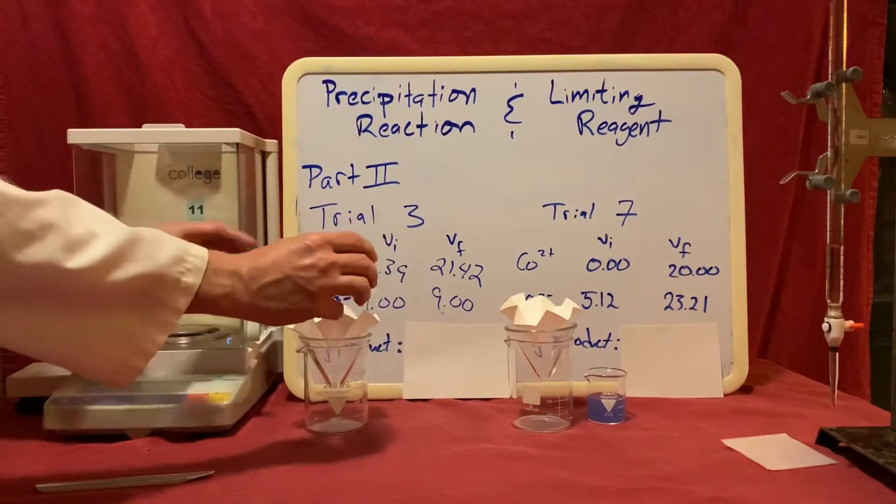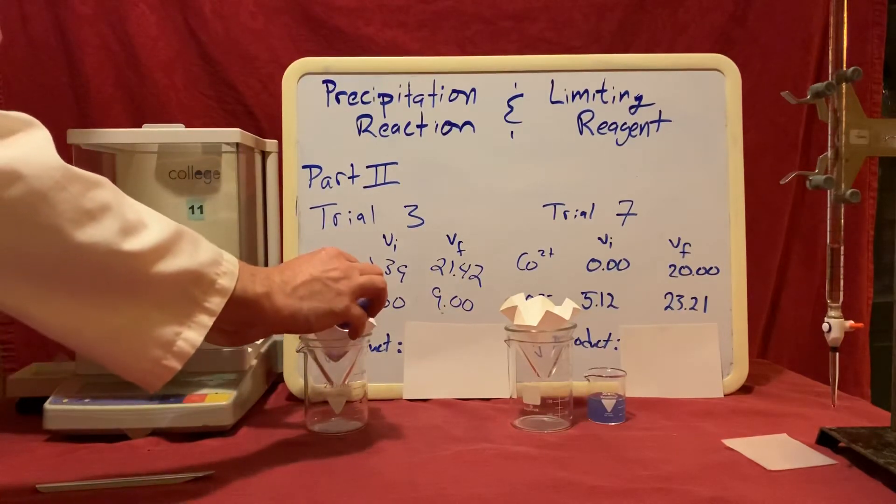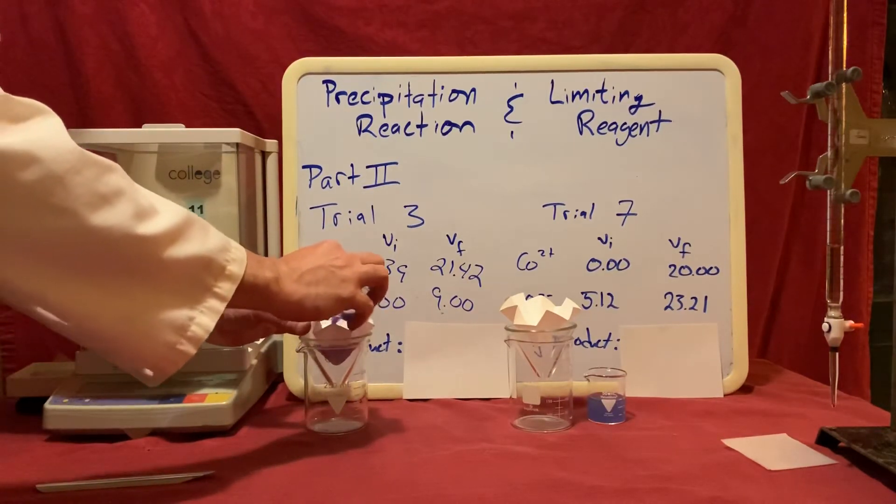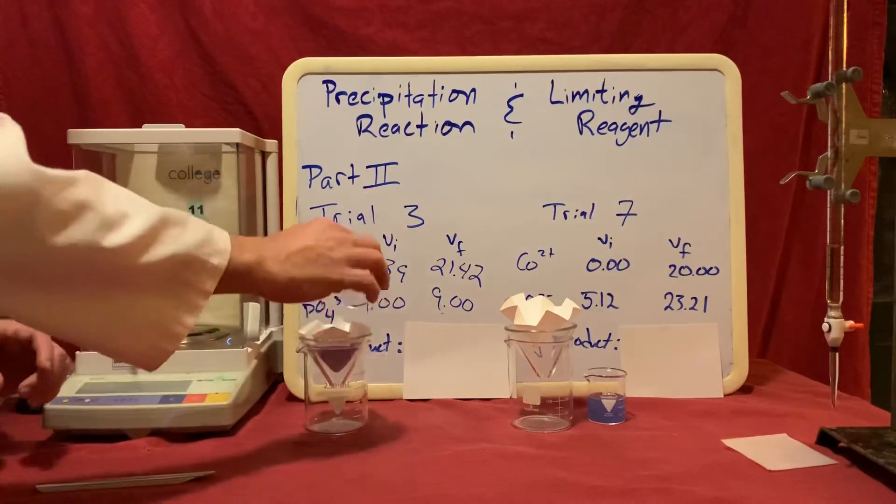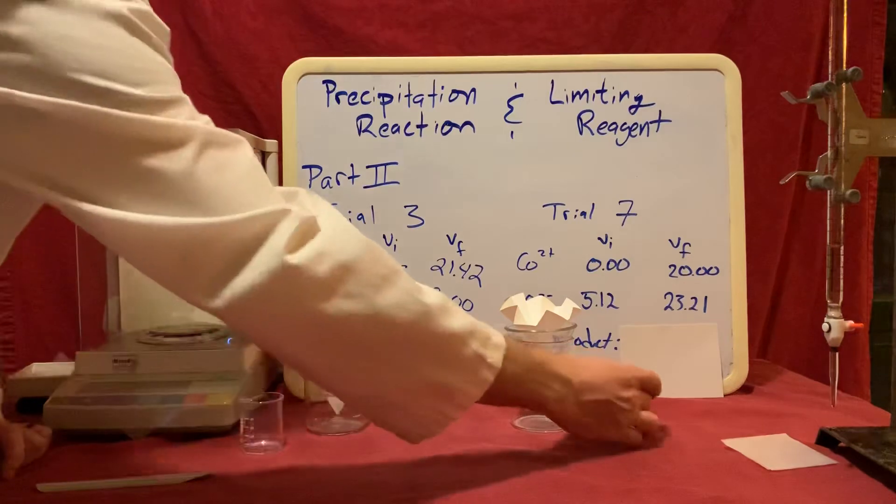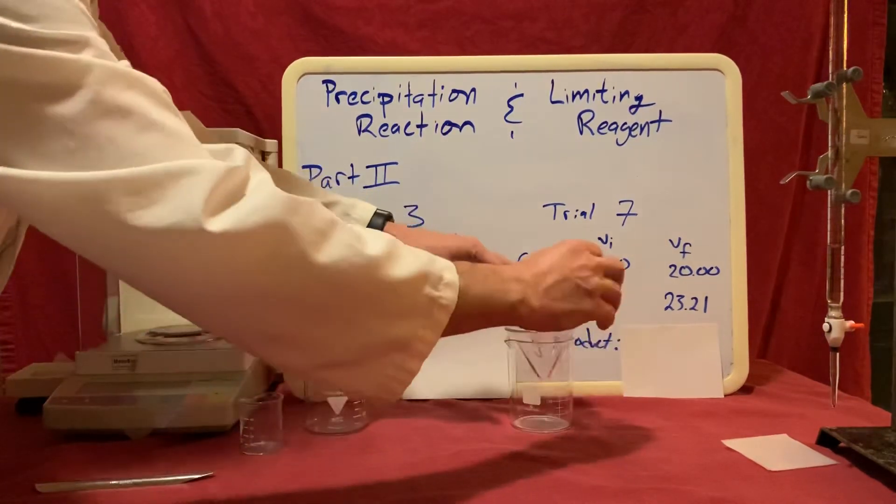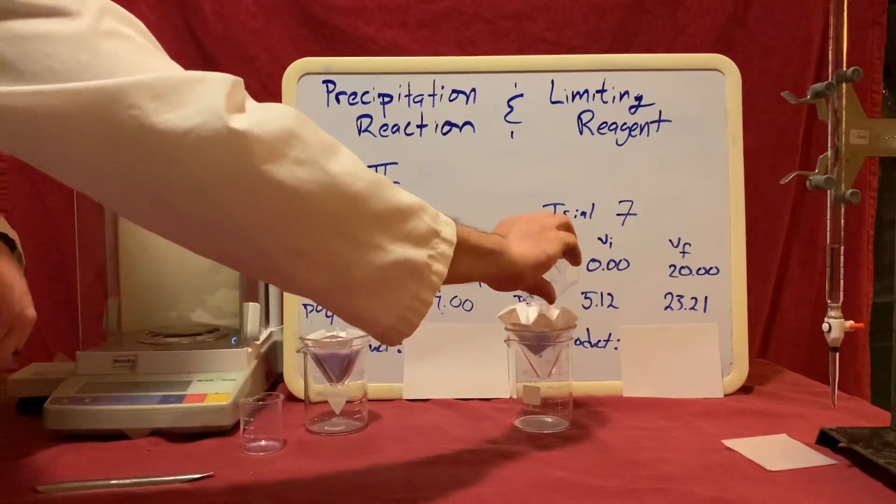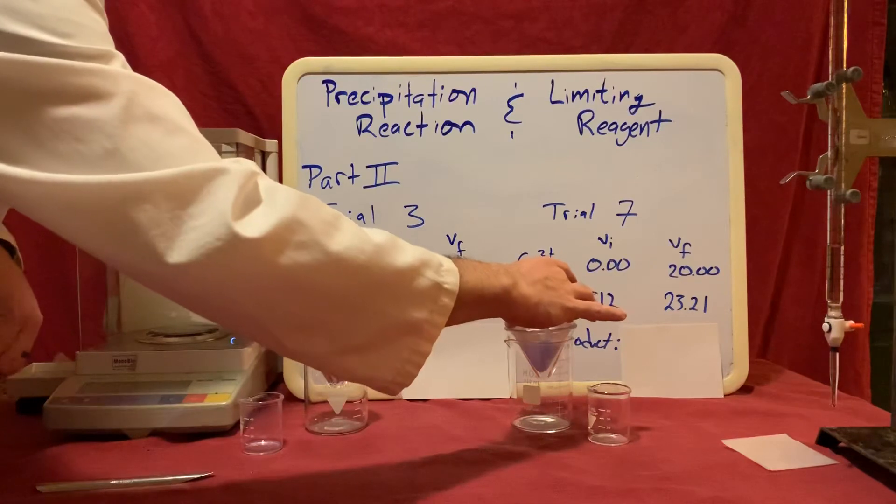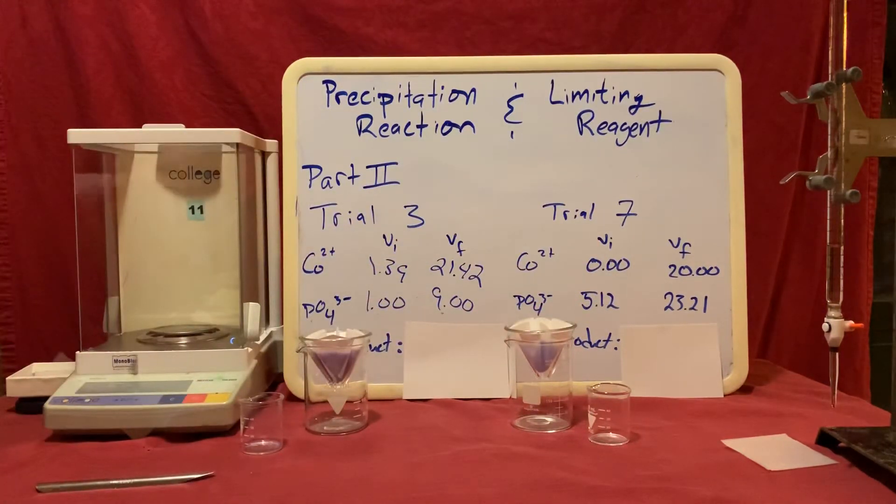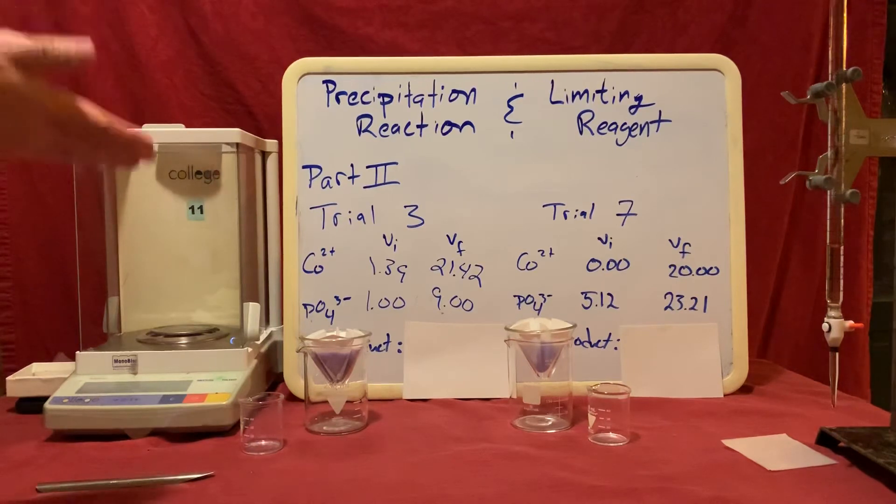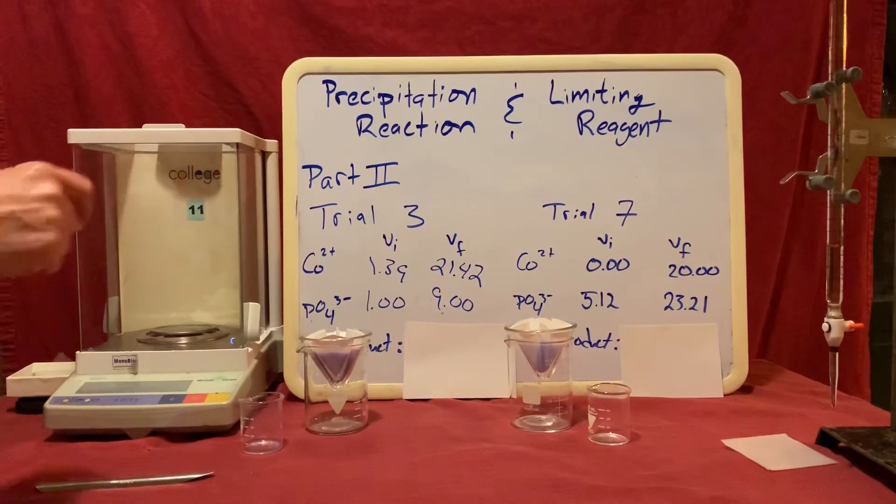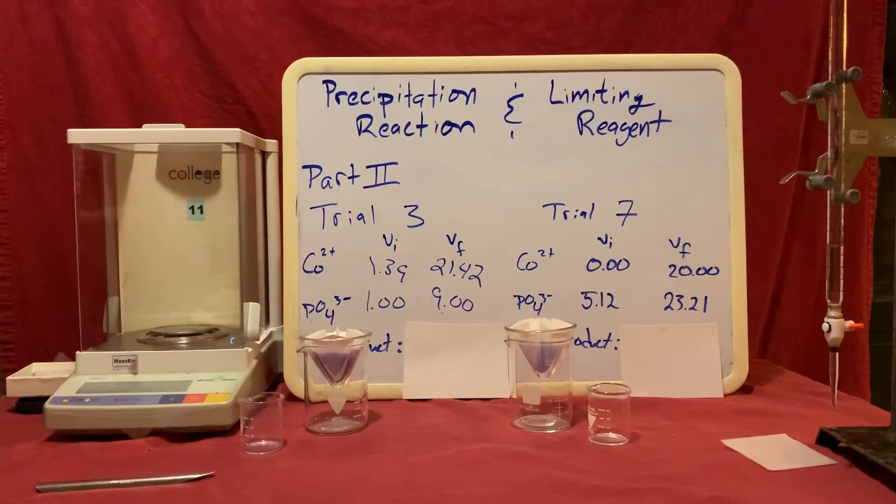I'm going to take my solid, I'm going to pour this through the filter paper and allow all the liquid to drain out. I'll do the same thing with trial 7. This filtration process takes some time. And once all the liquid here had drained out, I would add a little bit of deionized water to each one of my samples in order to rinse out any remaining solvent and diluted ions that it still contained.